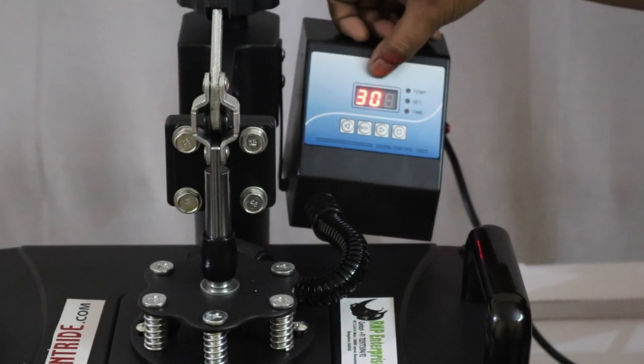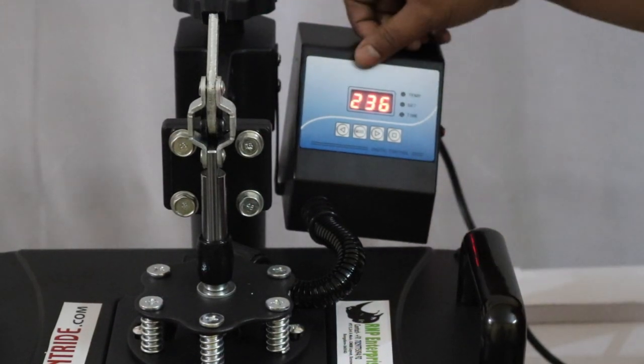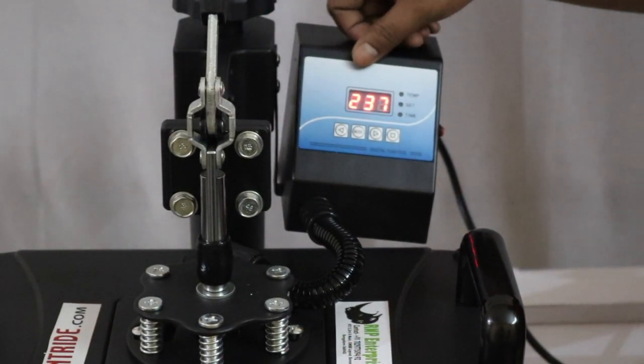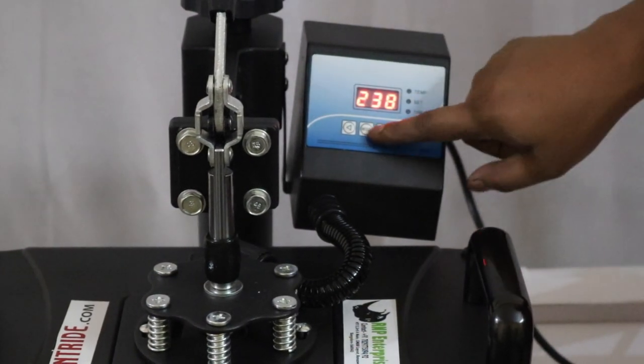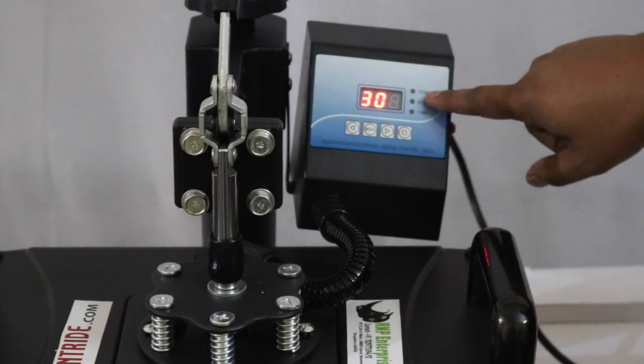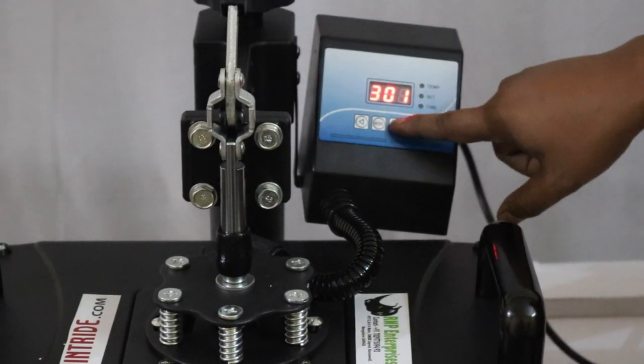In sublimation and screen printing, the standard temperature is 350. So we'll click it two times, go to this thing and set the timing according to you. So I set it in 300.